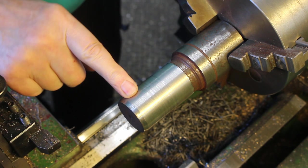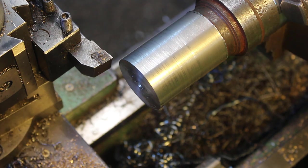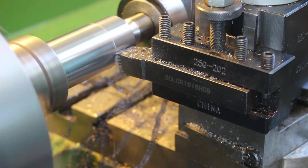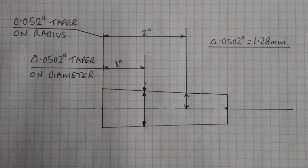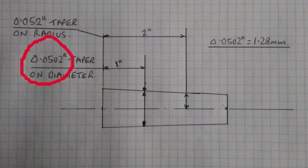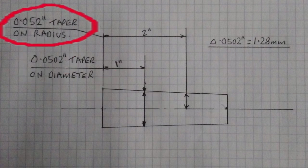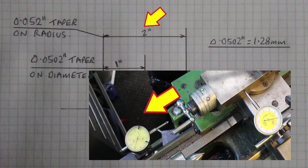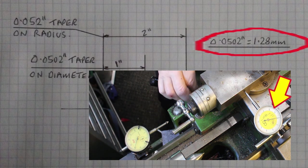It's pretty hard material, probably a 4130 or 4140. The taper on a number three morse taper is given as 0.502 inches per inch length on diameter. That equates to 0.0502 inches on radius over two inches. Therefore when I traverse the carriage two inches I'm looking for 0.0502 or 1.28 millimeters on the dial gauge.